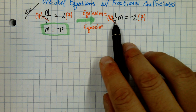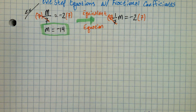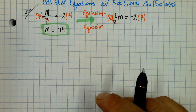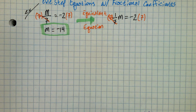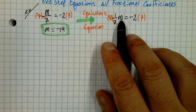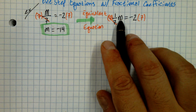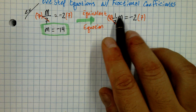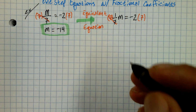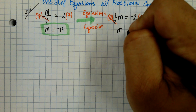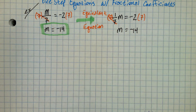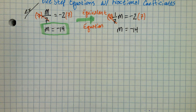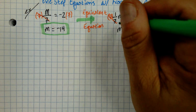Now I'm left with 1 times M. What's 1 times M? Well, 1 times M is M — it really didn't change anything. But over here, we got negative 2 times 7, so it's negative 14. So we get the same answer — that's why they're equivalent.